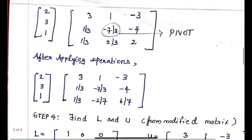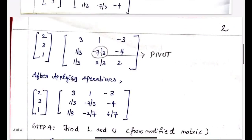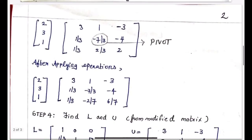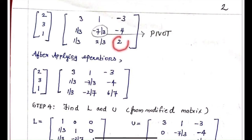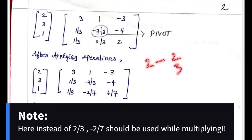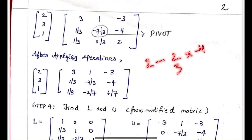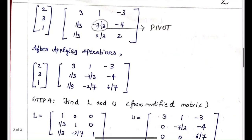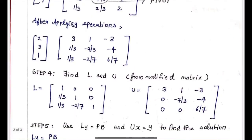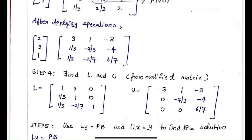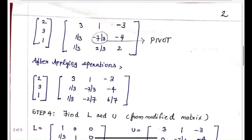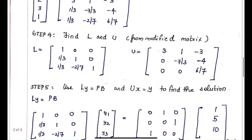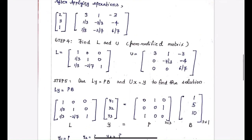Taking -7/3 as the pivot, we perform the same operations as before. We take the previous value 2 minus (2/3) into (-4). After performing all the operations, we get the modified A matrix. We need not shrink the matrix again because after shrinking to this sub-matrix, there's nothing more to do. So the iterative modification of the A matrix is done.